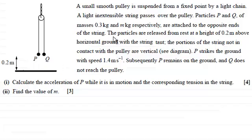The particles are released from rest at a height of 0.2 meters above the horizontal ground with the string taut. The portions of the string not in contact with the pulley are vertical and P strikes the ground with a speed of 1.4 meters per second. Subsequently, P remains on the ground and Q does not reach the pulley.